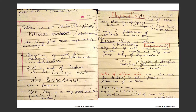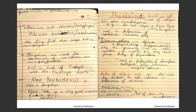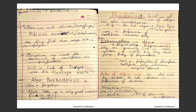Laxatives used for treatment of constipation are actually mucopolysaccharides because they help in the formation of mucus for better flow of fecal matter. They are present in the husk of Isabgol, also known as Plantago ovata. Aloe barbadensis (aloe vera) also helps in treatment of constipation and is famous for its mucopolysaccharides — it is used as a moisturizer in skin cosmetics.